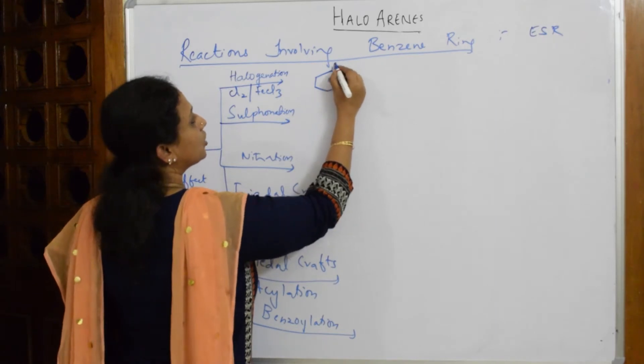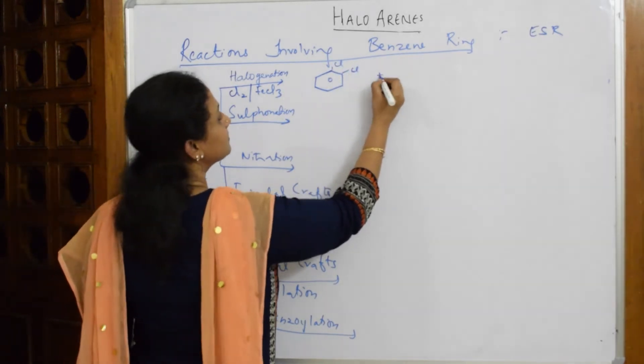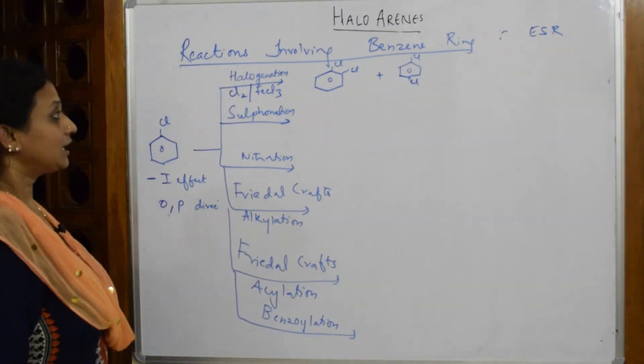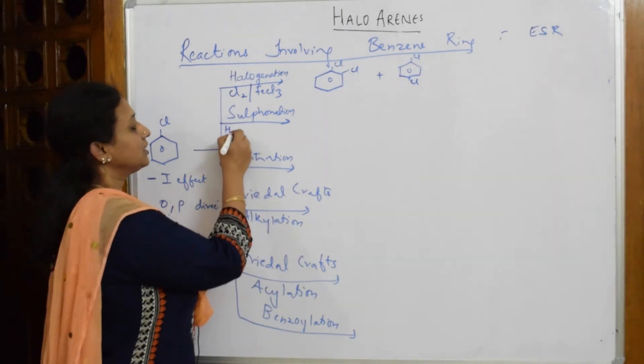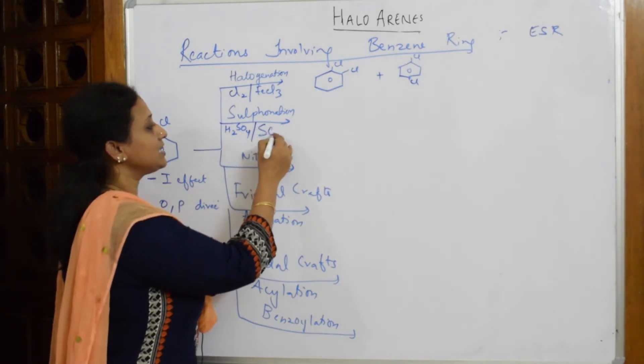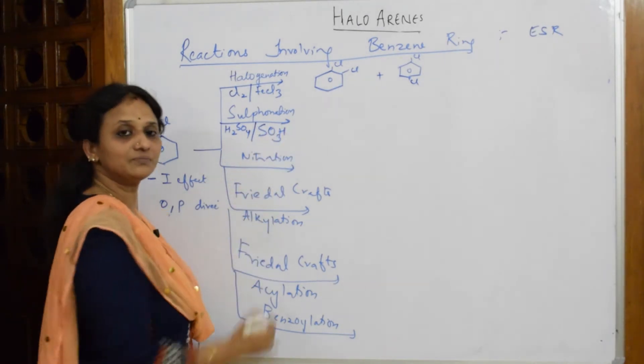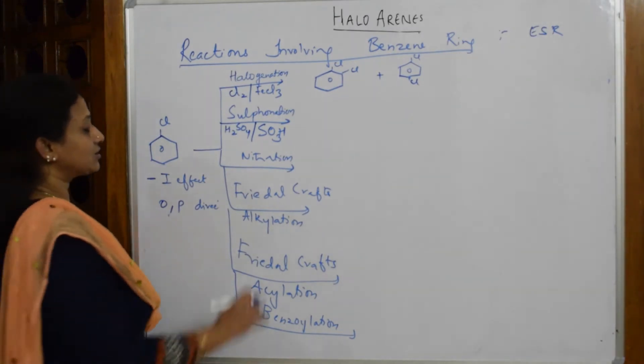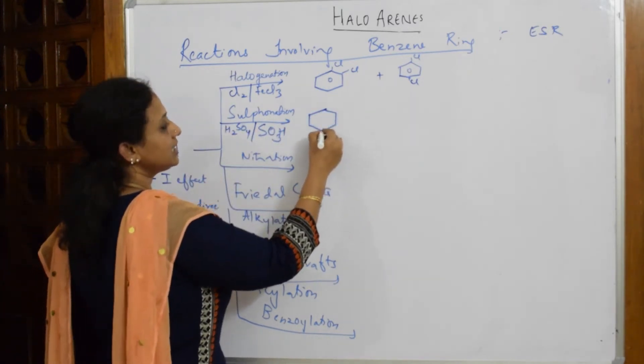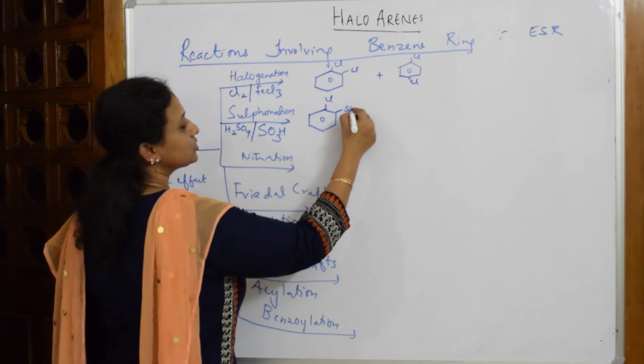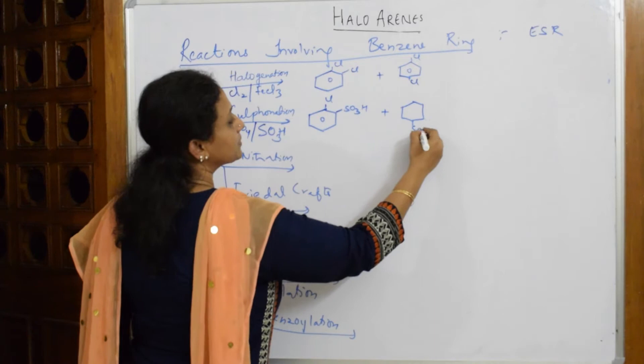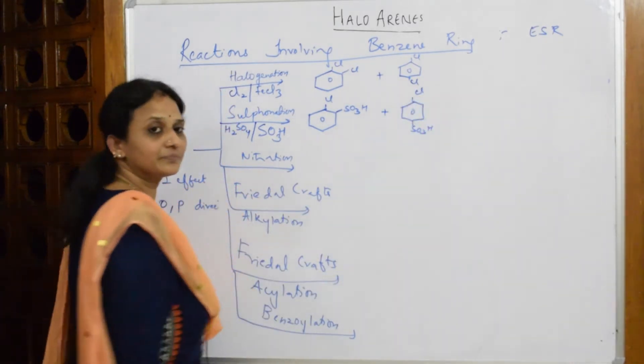In sulfonation reaction, this occurs in the presence of sulfuric acid and the electrophile which is going to supply is SO3H. This is what we studied in grade 11. SO3H is electrophile. This SO3H occupies the ortho position and para position. So what do you get? This ring with Cl and SO3H at the ortho position and SO3H at the para position.